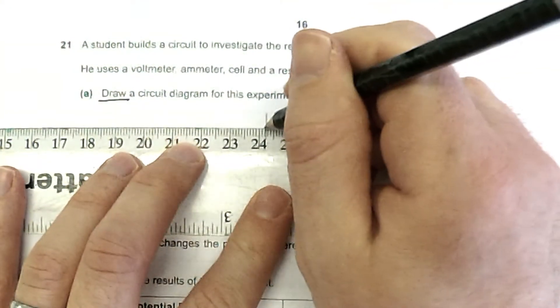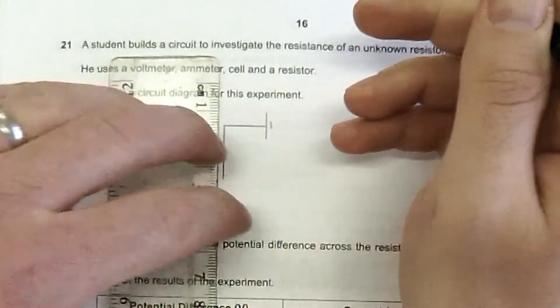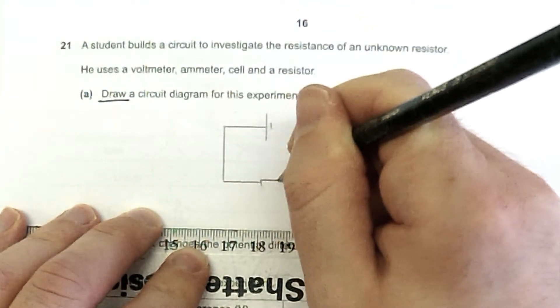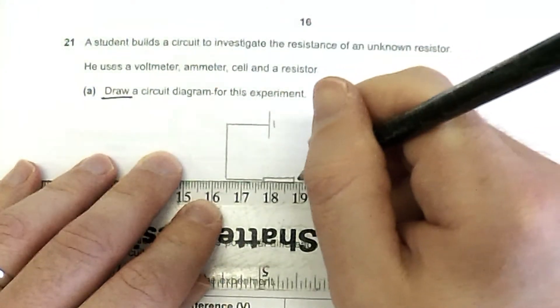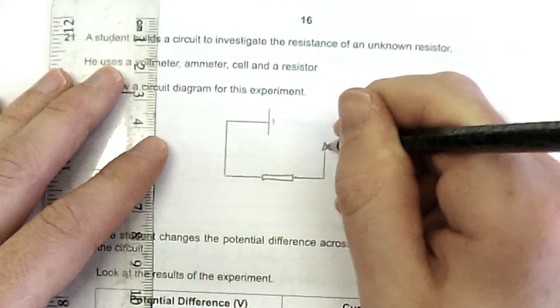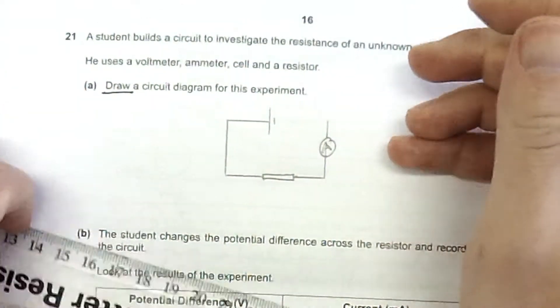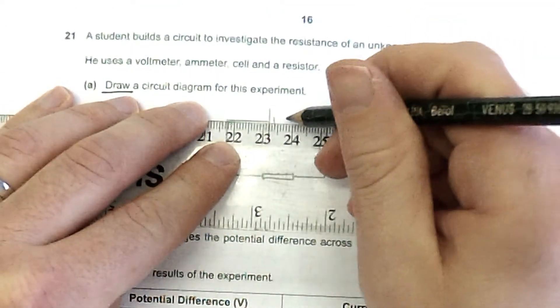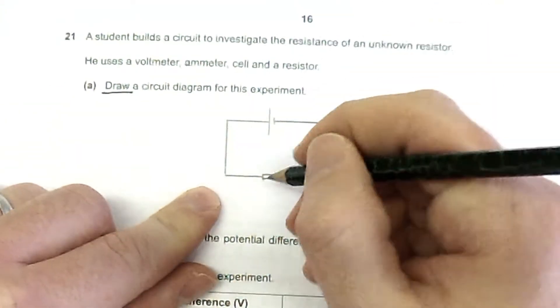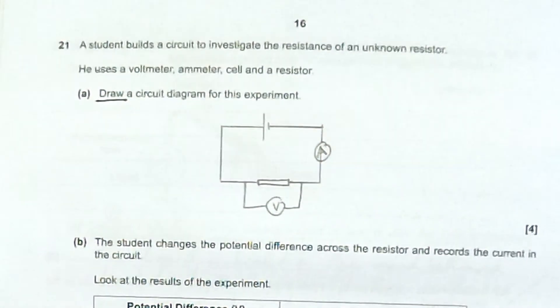So there's my cell. The component that I'm testing needs to go in series with the cell and in this case it's a resistor. And we need to measure the current, so we need an ammeter in series with that. And it needs to be in series. That is a mark there. Where do we put a voltmeter? We put voltmeters across what we are measuring. So that is my circuit diagram there.